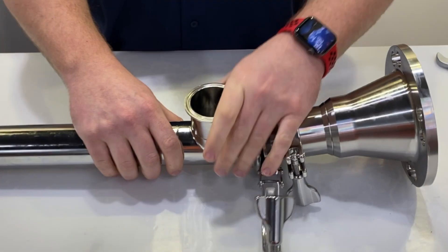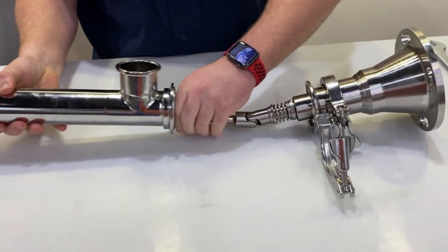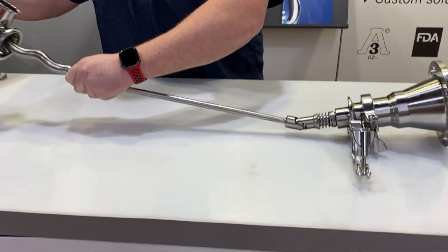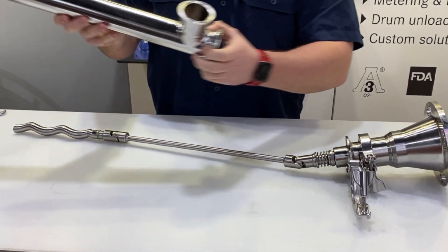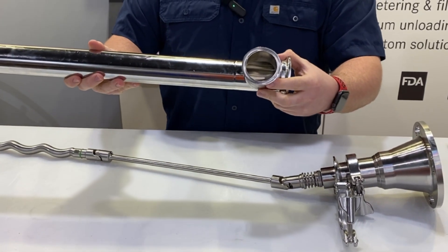Once that's removed, it'll allow you to slide the pump tube off. Note that this discharge is a true two-inch tri-clamp.